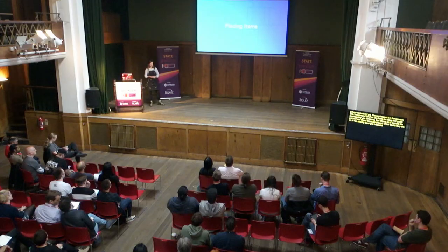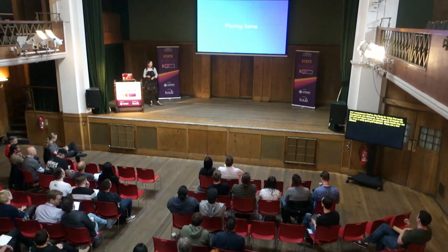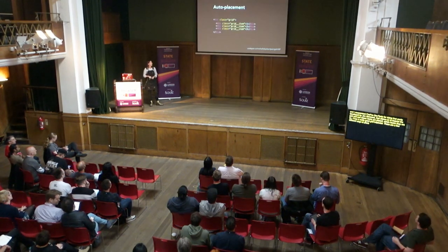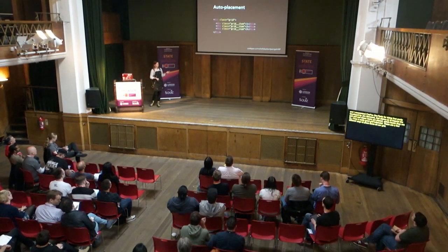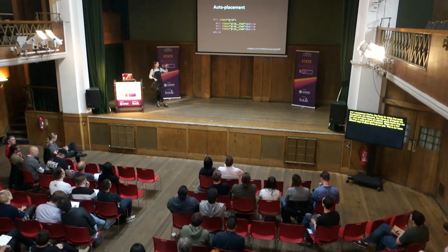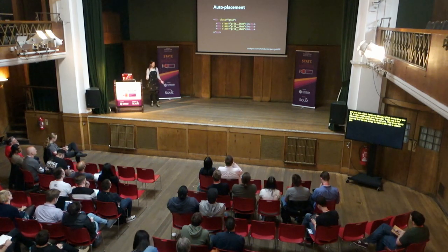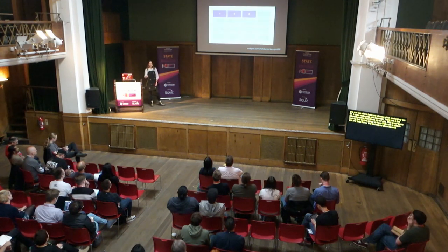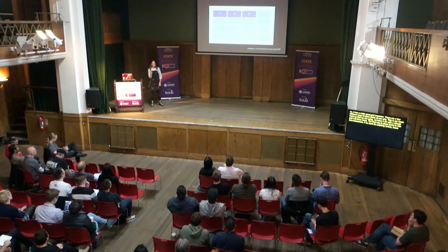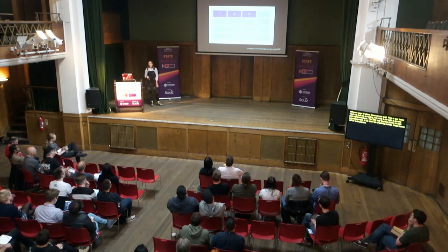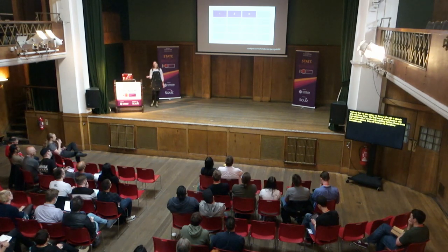There are a few different ways to place items on our grid. This is our basic markup: a div with a class of grid and three child items. The first way we can place items is with auto-placement. If we don't do anything further, those items will just take up the first three available cells. Sometimes that's desirable behavior, like the news feed example.